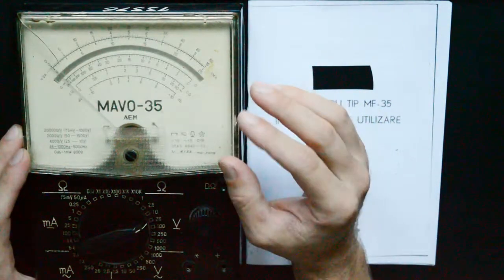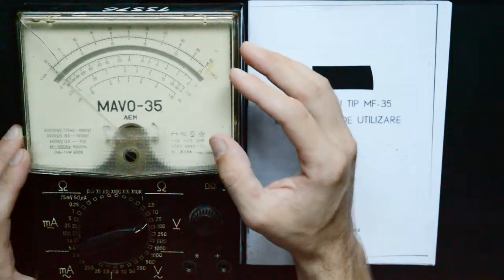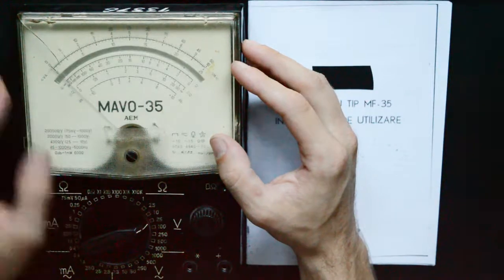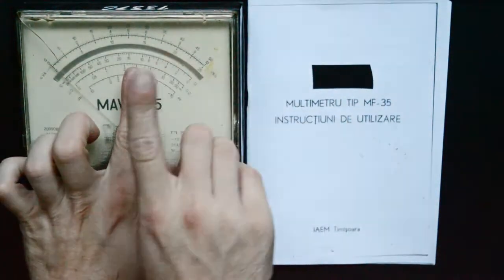Also, there was a nice trick done to ensure that you are doing a correct measurement. We have a mirror behind the needle, and the idea is that when you are looking at the needle and you see the reflection behind it, so you see two lines, you are doing an incorrect measurement.